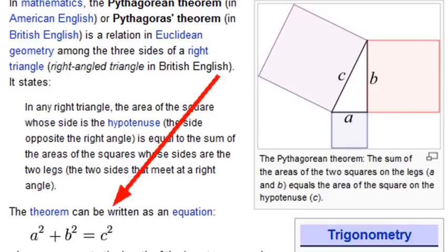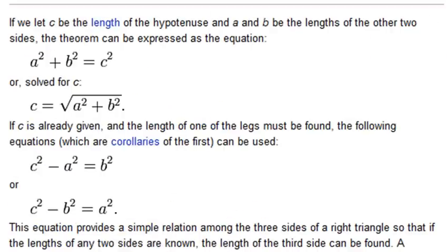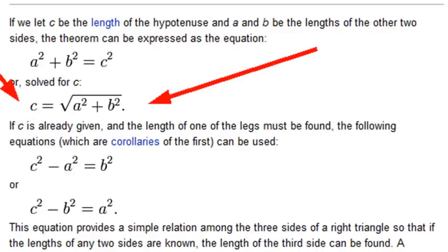But we're not necessarily interested in finding C squared — we want to find C. To get from C squared to C, you just use the square root. So the real formula we're looking for is: C equals the square root of A squared plus B squared. Let's see if we can do that programmatically.